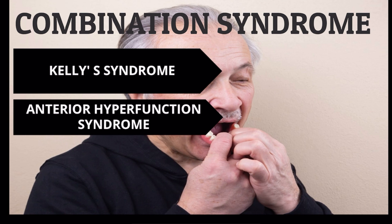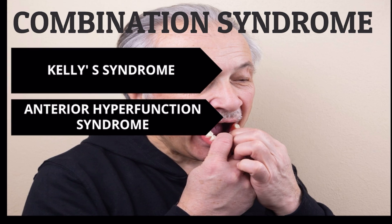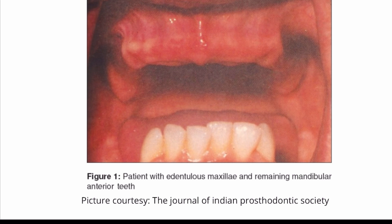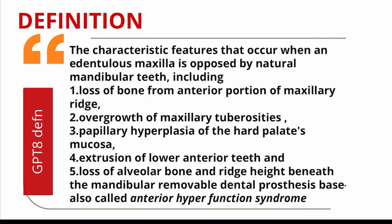Combination syndrome is also known as Kelly's syndrome, after Kelly who first noticed this phenomenon, and as anterior hyperfunction syndrome, as the syndrome occurs mainly due to hyperfunction of the anterior teeth. As the name suggests, syndrome means a group of symptoms — it is a group of symptoms that occurs in patients who are using an upper complete denture and a lower distal extension RPD. The patient will be completely edentulous in the maxilla with just a few anterior teeth in the lower arch.